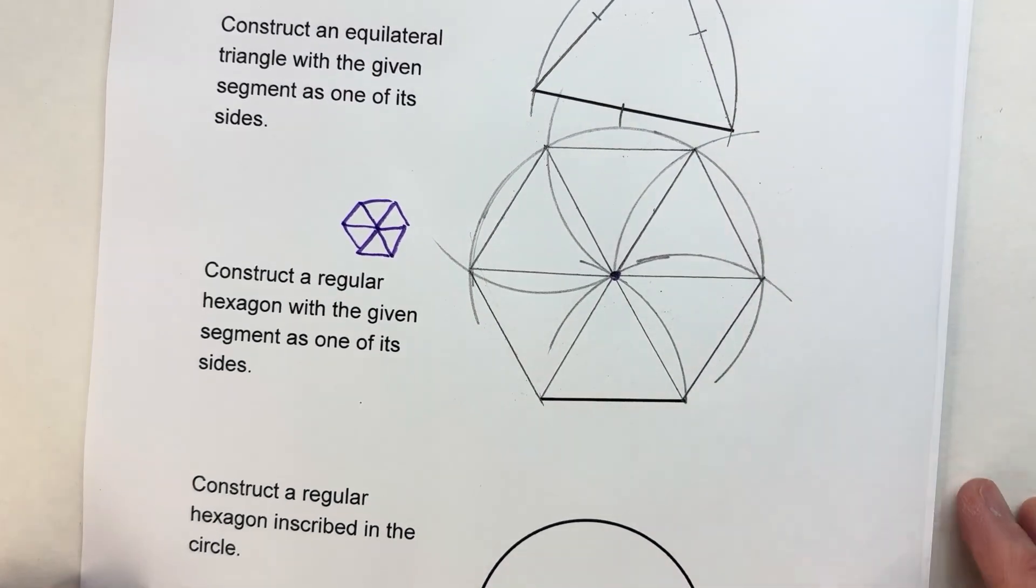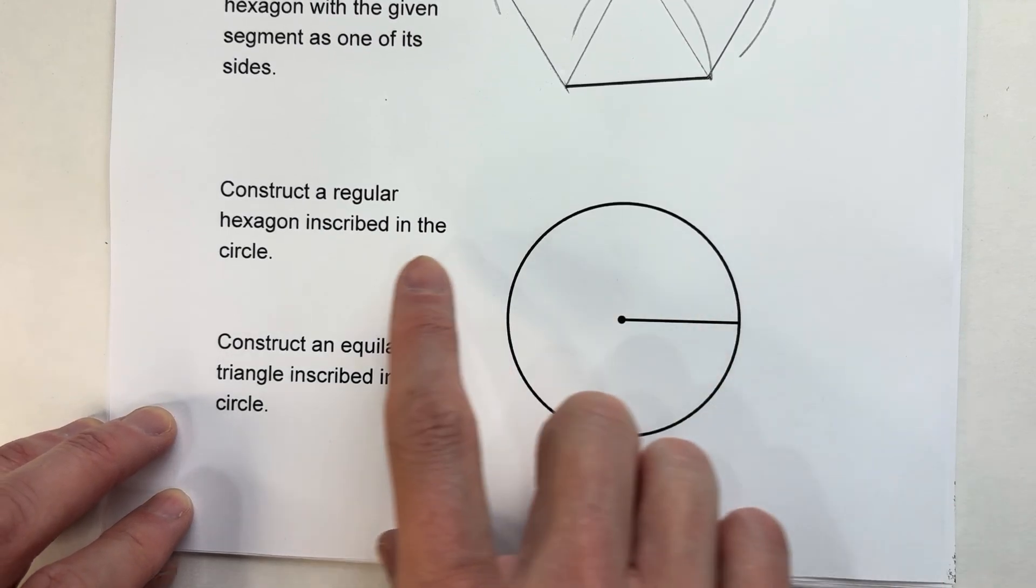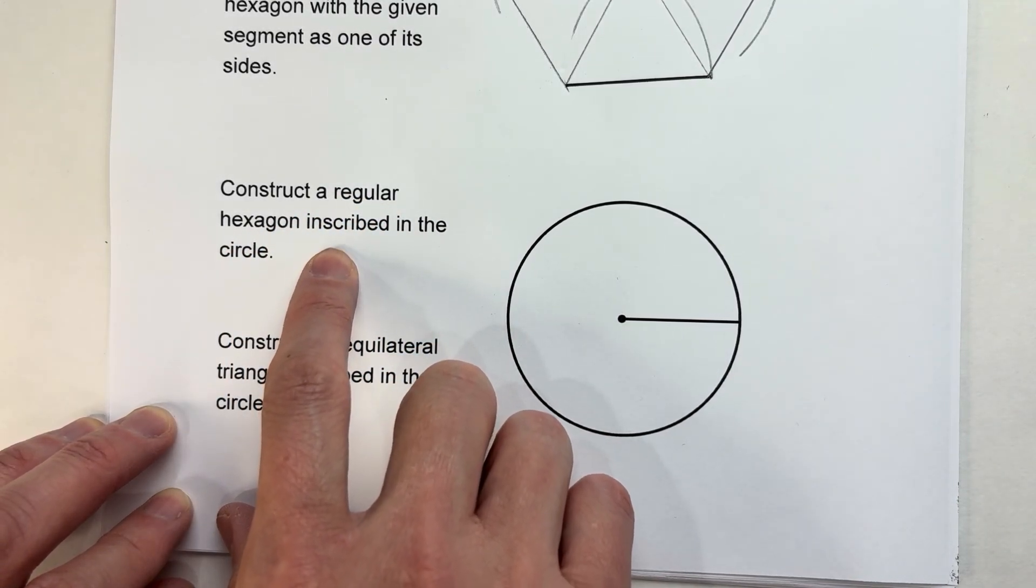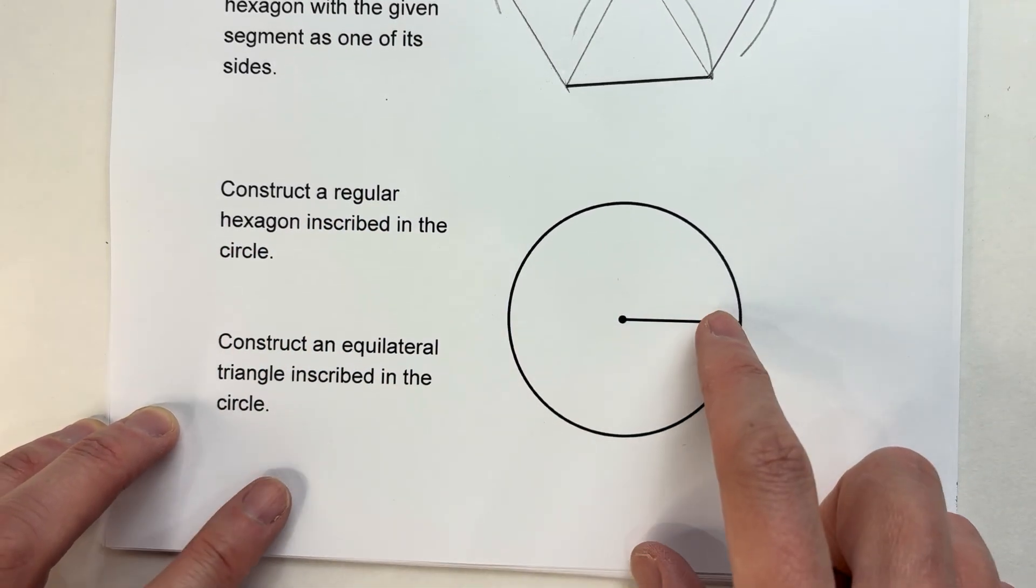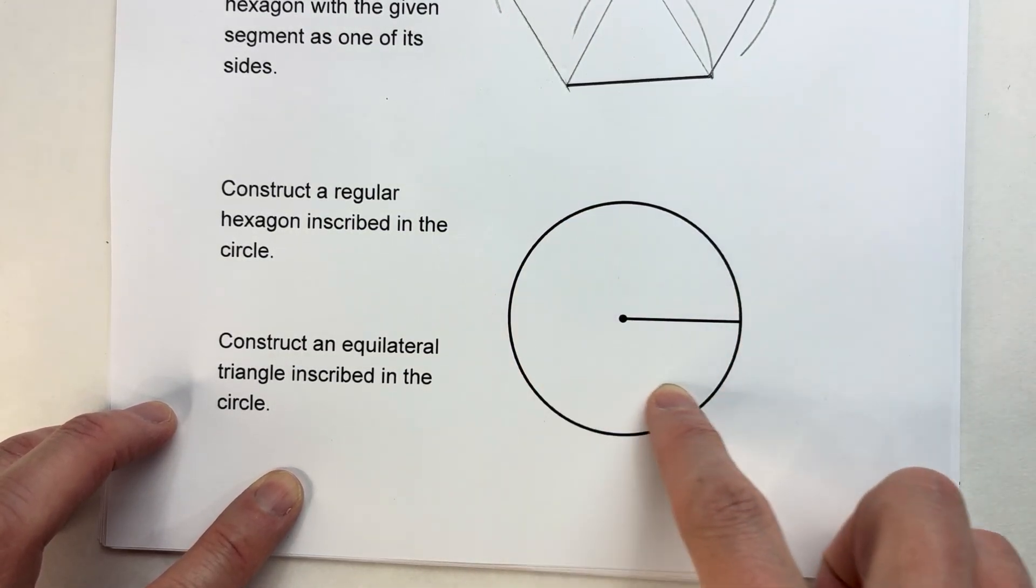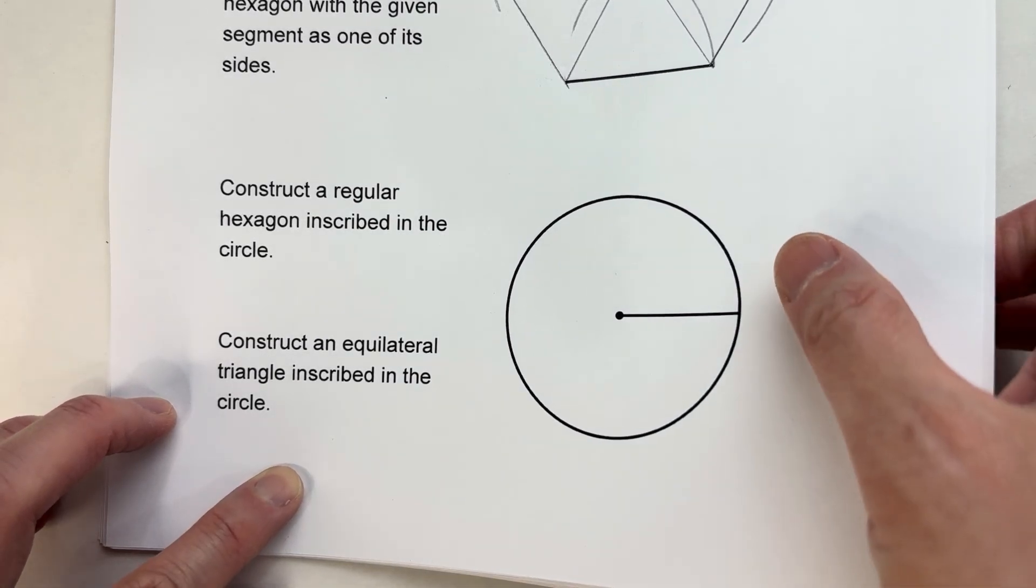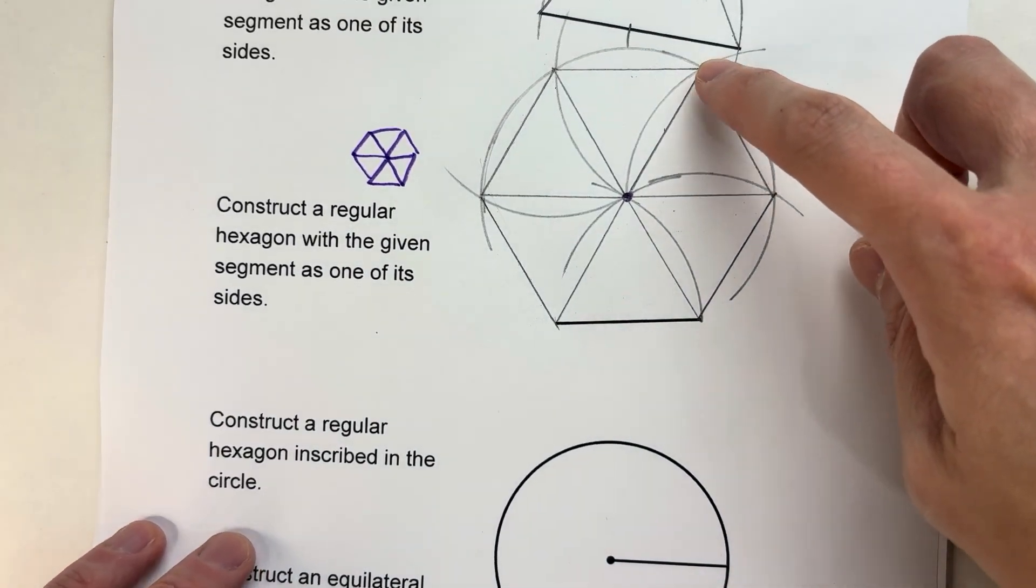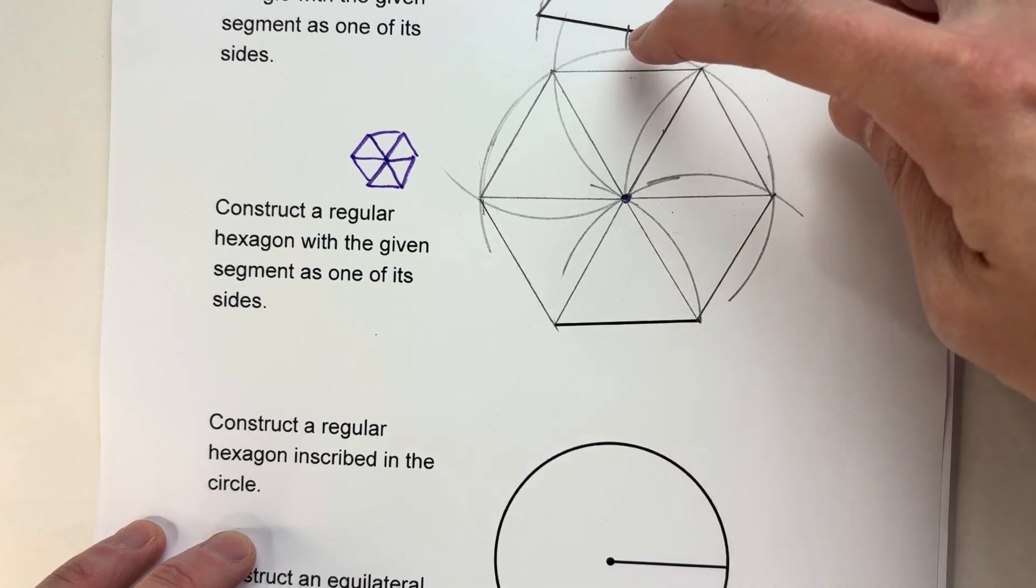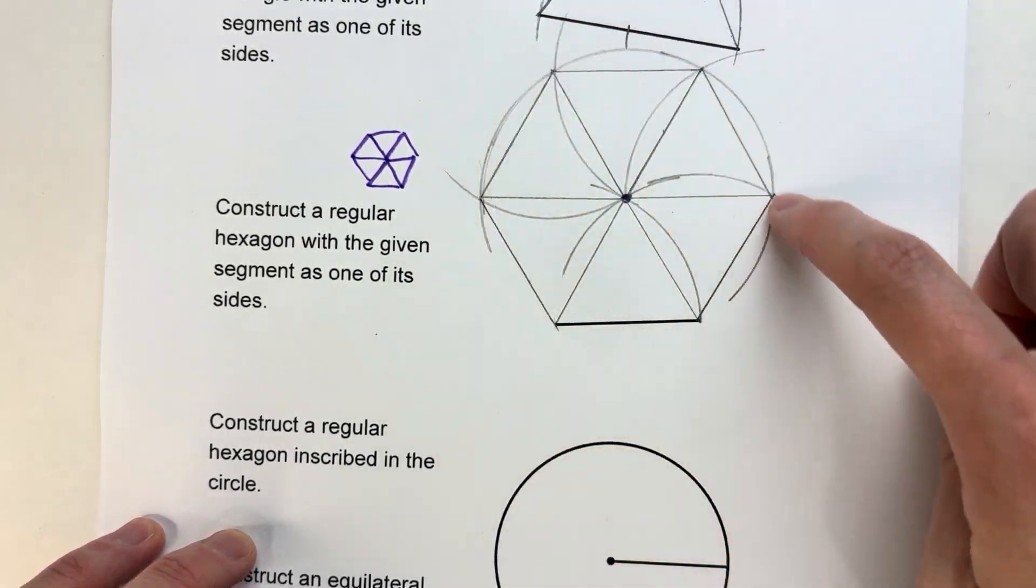Now let's get a little trickier. This time I have a circle, and I want to construct a regular hexagon inscribed in the circle. What that means is we want the regular hexagon to fit exactly inside of this circle, so all the corners of the hexagon hit exactly on the edge of the circle.